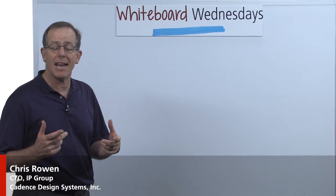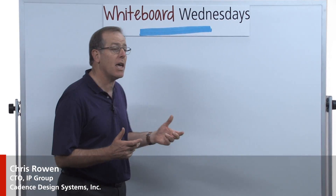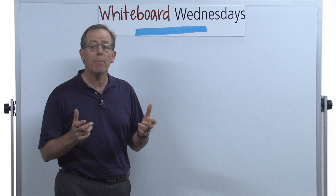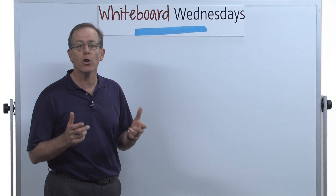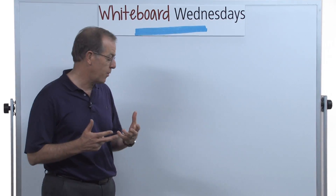Hi, I'm Chris Rowan. I'm the CTO for the IP group of Cadence, and I'm going to talk to you today about optimizing neural networks for low energy and high throughput.